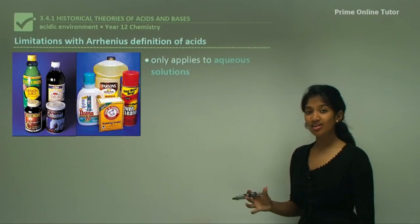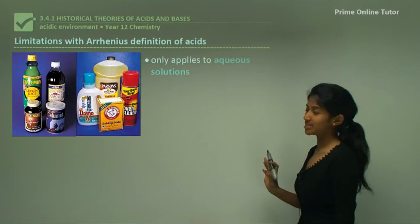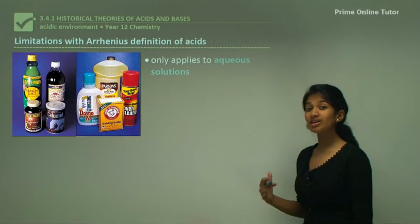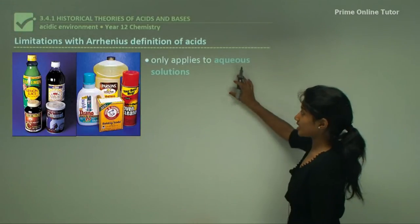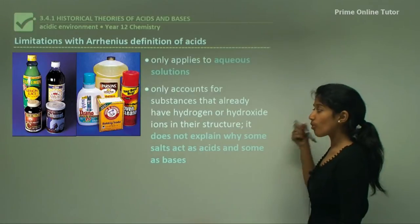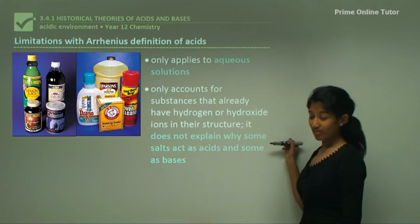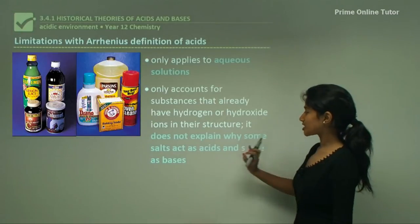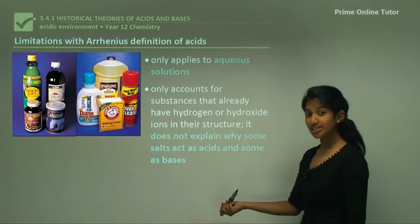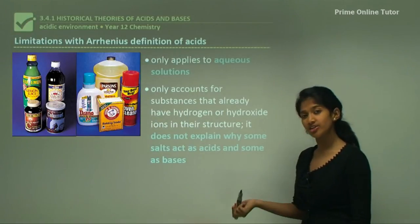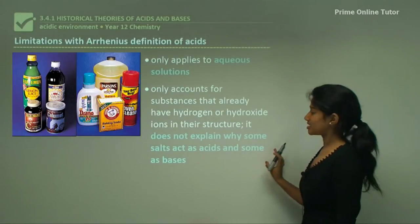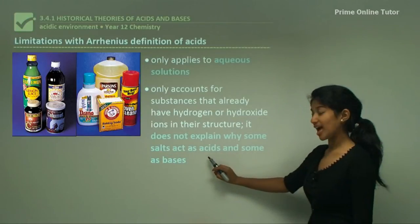However, Arrhenius's theory of acids and bases had some limitations. It only applies to aqueous solutions — he did not explain behavior in gases or other states. He also only accounted for substances that already have hydrogen or hydroxide ions in their structure, and did not explain why some salts act as acids and some as bases. For example, ammonia doesn't have any hydroxide but it's a base, which he could not explain.